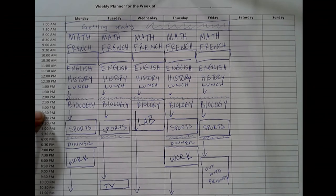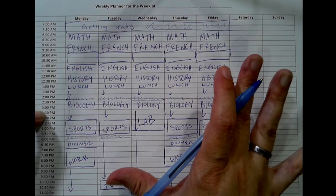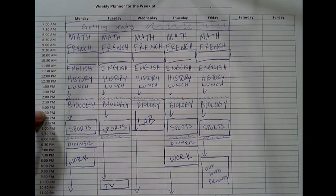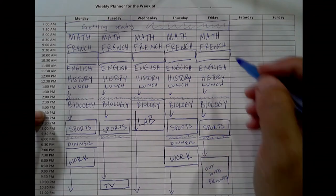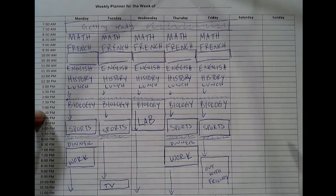Once you have this calendar established, you may want to make copies of it — either Xerox a paper version or use it as a template in a digital calendar to copy the same schedule onto every new week. Then you'll look at your to-do list, note where you have free time, estimate how much time each task will take, and start plugging those tasks into the available slots on your calendar.